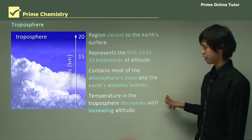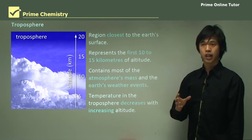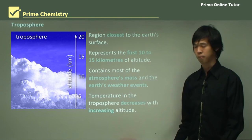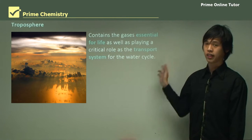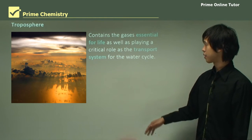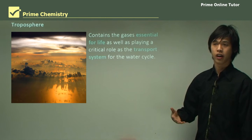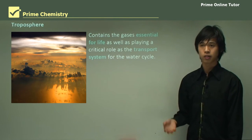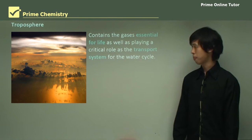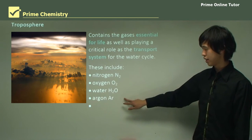Within the troposphere, the temperature decreases as we go upwards — so it gets colder as altitude increases. If you were a mountain climber, you'd experience colder temperatures at the top compared to the bottom. The troposphere contains all gases essential for life: oxygen, nitrogen, carbon dioxide for plants, and water vapor. It also plays a critical part in the water cycle, as clouds and evaporated water are pushed around by wind, moving water from one place to another. The major gases include nitrogen, oxygen, water, argon, and carbon dioxide.